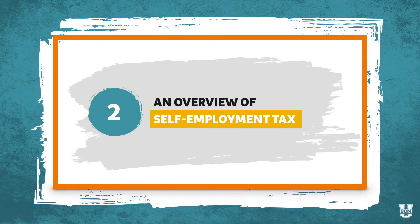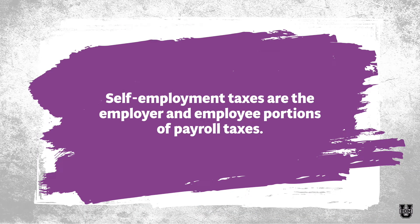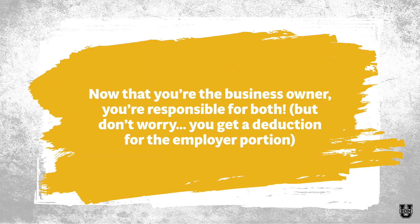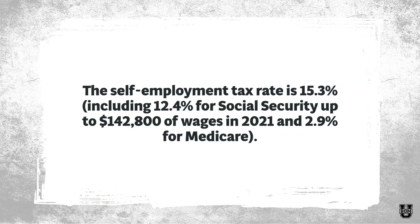Now let's look at self-employment tax, which gets folded into this income tax filing conversation. Self-employment taxes are essentially both the employer and employee portion of payroll taxes. When you were an employee, you had the employee portion taken out of your paycheck — but your employer also had to pay a portion for you. Now that you are the business owner, you're responsible for both. You do get a deduction for the employer portion, so the tax hit isn't as bad. The self-employment tax rate is currently 15.3%, made up of 12.4% for Social Security and 2.9% for Medicare. That 12.4% for Social Security applies only to the first $142,800 in wages for 2021, and that number goes up every year.